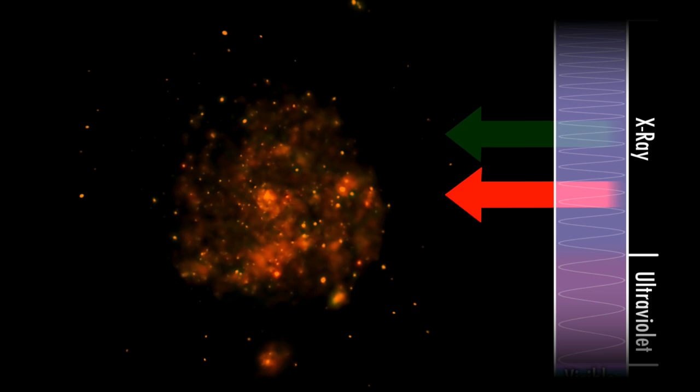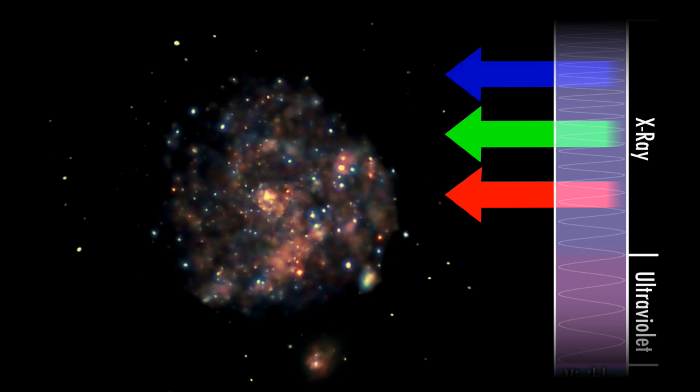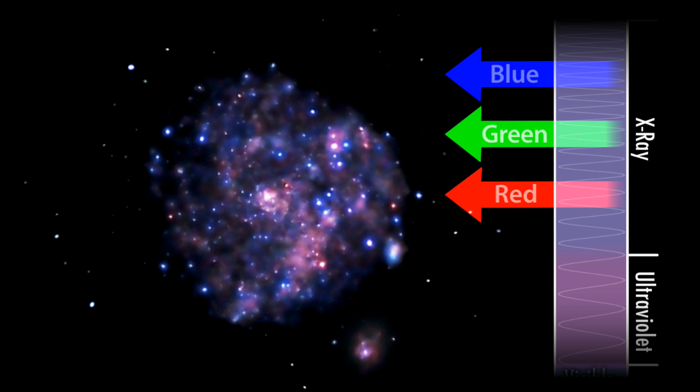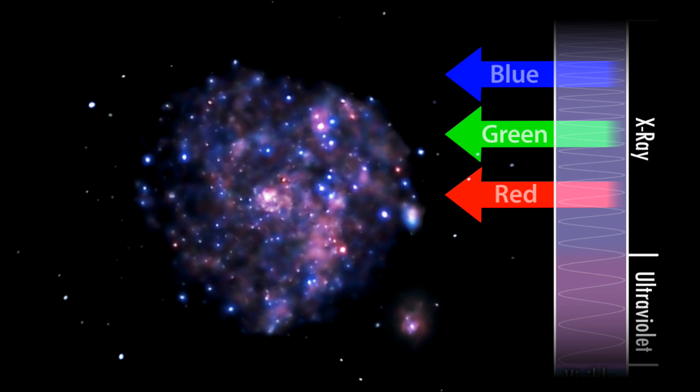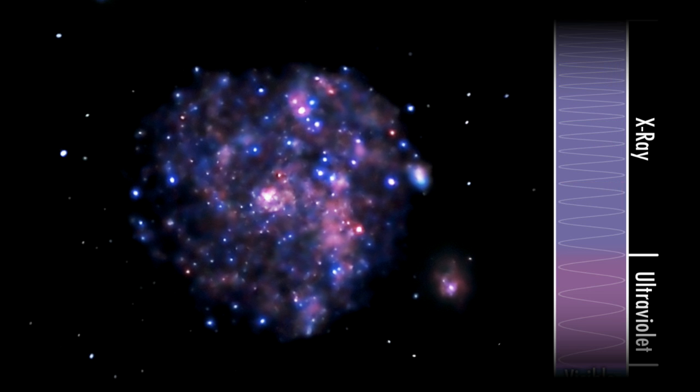We do the same thing with this Chandra image, but now we're using X-ray observations as the source. The colors we see now mean something entirely different than they did in the Spitzer image.